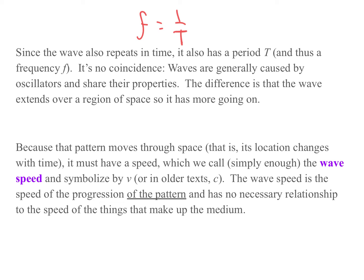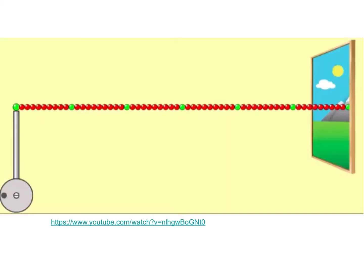Because that pattern moves through space, that is, its location changes with time, it must have a speed, which we call, simply enough, the wave speed. And we symbolize by a lowercase v. In older texts, people use c for wave speeds, but since the advent of relativity, that's been reserved for the speed of light, and people have moved away from it, so we usually use v, and maybe v sub sound if we're talking about sound waves, or some other indicator. The wave speed is the speed of progression of the pattern, and it has no necessary relationship to the speed of the things that make up the medium.